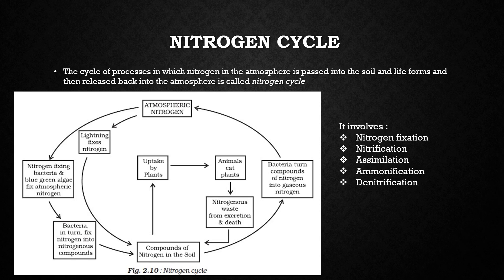Some of the nitrogen compounds formed from the decay of dead plants and animals are decomposed by denitrifying bacteria present in the soil to form nitrogen gas. This process is known as denitrification, and this nitrogen gas goes back into the atmosphere. Denitrification is the reverse process of nitrogen fixation. As a result of the nitrogen cycle in nature, the percentage of nitrogen gas — 78% — always remains constant.